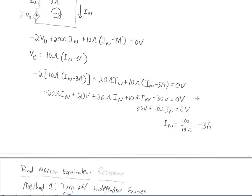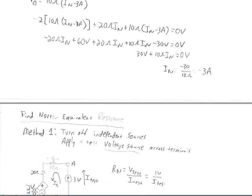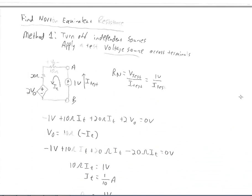We now have our Norton equivalent current: negative 3 amps, meaning 3 amps pointing downward in the standard orientation. To find the Norton equivalent resistance, there are a couple of options. In both options we turn off all independent sources. Because we have a dependent source, we can't simply look at the resistance directly — we turn off independent sources, leave the dependent source in, and apply a test source. We can either apply a test voltage and solve for the current, or apply a test current and solve for the voltage.